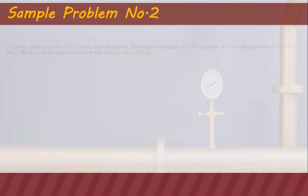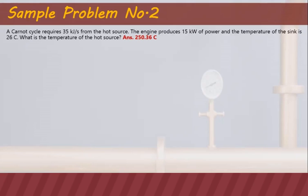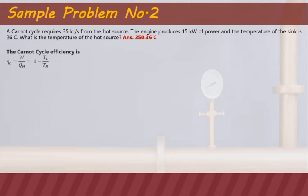Sample problem number two. A Carnot cycle requires 35 kJ per second from a hot source. The engine produces 15 kW of power and the temperature of the sink is 26 degrees Celsius. What is the temperature of the hot source?